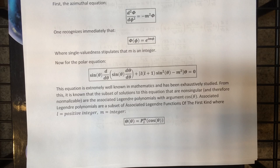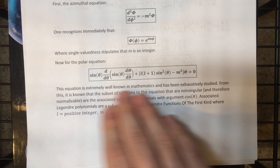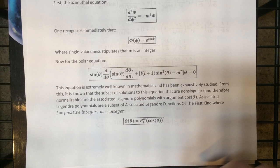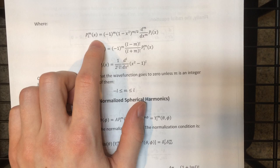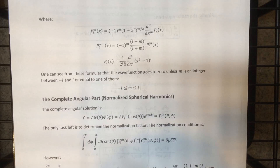That's what came from the mathematical research of this equation, which was well known before this problem came about. Now let's look at these associated Legendre polynomials a bit more to get an interesting piece of information about the quantum numbers m and l. These are the associated Legendre polynomials in terms of the Legendre polynomials. Basically, m controls the order of the derivative of the Legendre polynomial you have to take to get the associated Legendre polynomial.